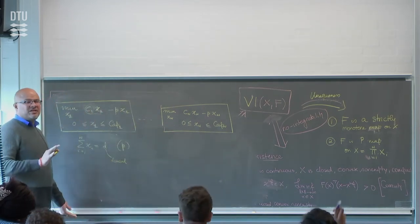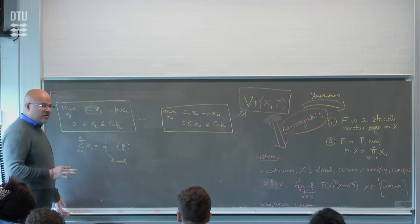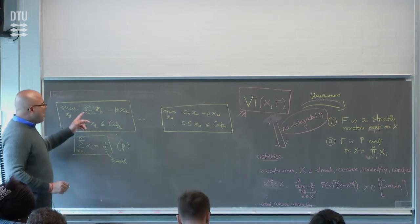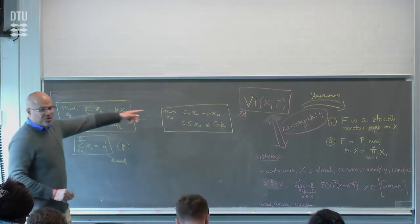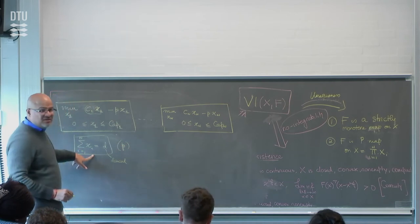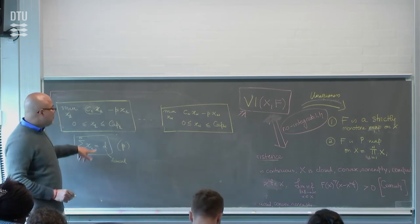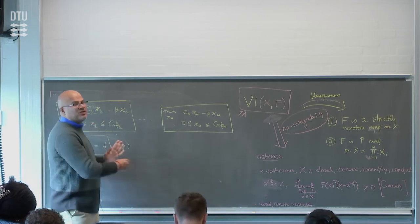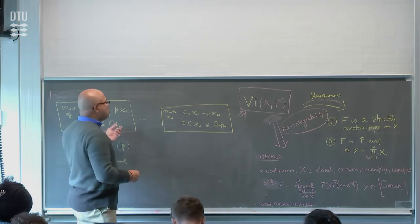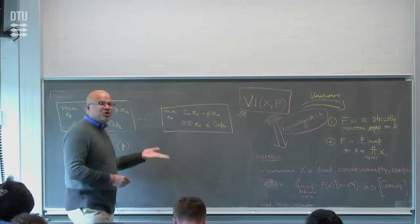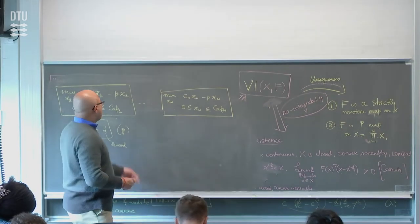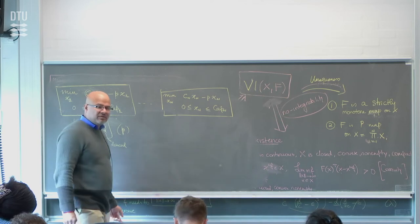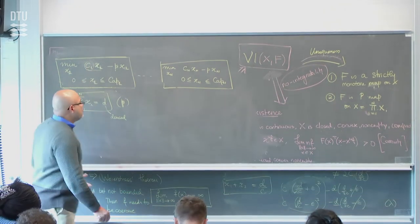This is what couples these problems. The demand is exogenous because it's imposed outside these individual problems. You want a collection of solutions that all satisfy the demand constraint. That's why you can't solve these in isolation—I'm going to show you that when you pick p in a sensible fashion, you get exactly this requirement.